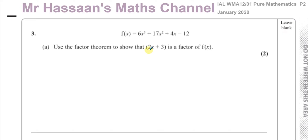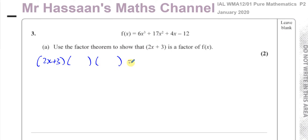So we have to show, using the factor theorem, that 2x plus 3 is a factor of f(x). Basically, when it's a factor, that means when you divide this function by 2x plus 3, you'll have no remainder. One of the ways of doing that is to substitute whatever value causes this bracket to be 0 into this function. Because if it's a factor, you'll have 2x plus 3 times another factor — this is cubic — times another factor, equals 0. When x equals a value which causes this bracket to be 0, it will be a factor of this expression.